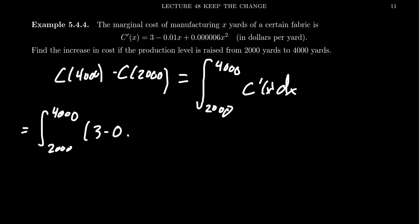We get 3 minus 0.01x plus 0.000006x squared dx.